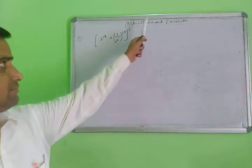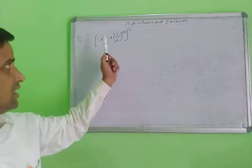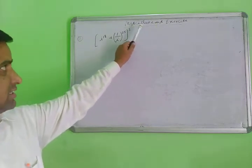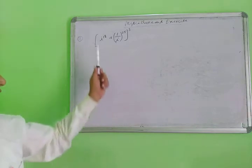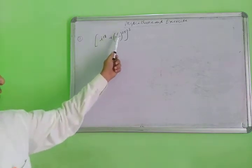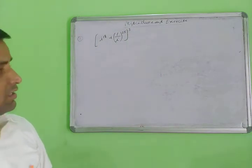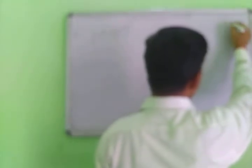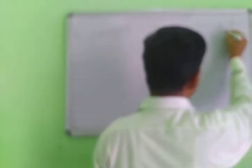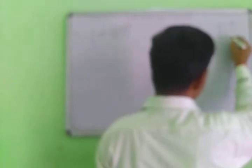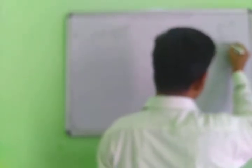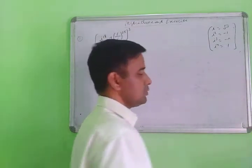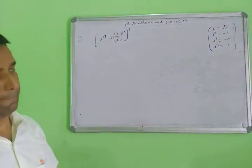Next, from the mixed exercise, question number one: compute (iota^18 + 1/iota^25)^3. Remember: iota = √(−1), iota² = −1, iota³ = −iota, iota⁴ = +1. Keep these values in mind; we will solve this question using them.